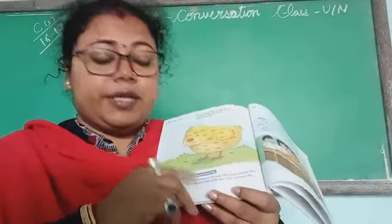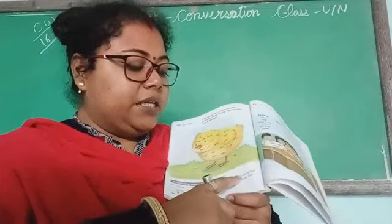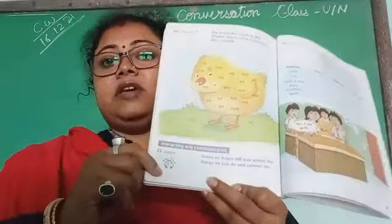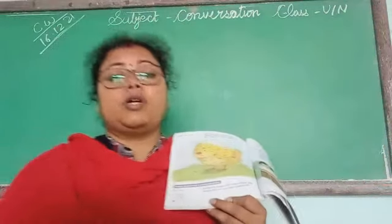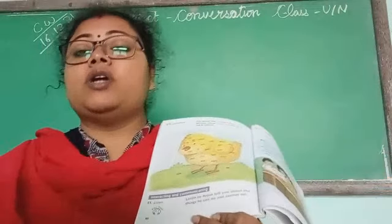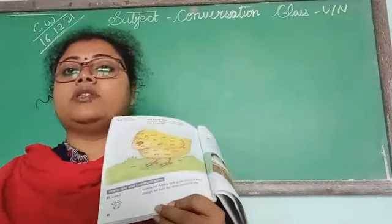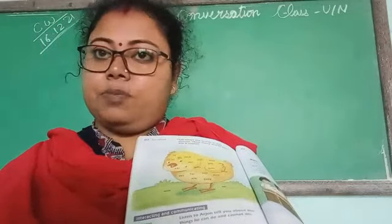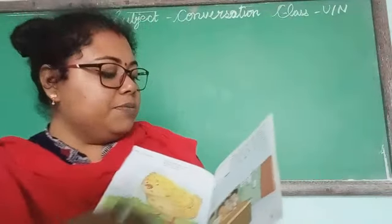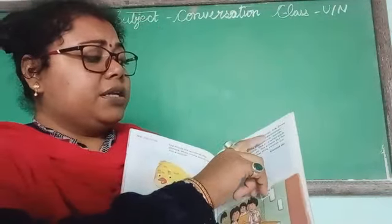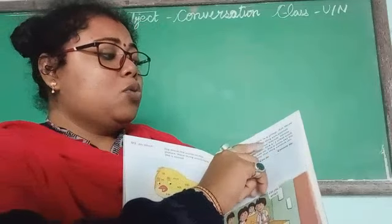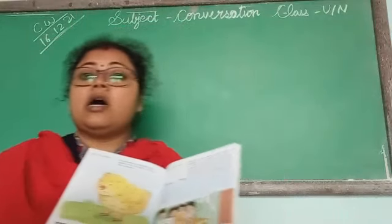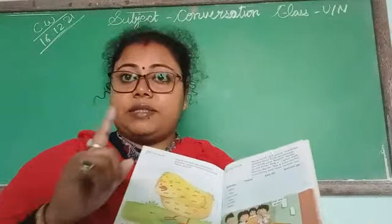Now come to the next activity. Listen to Arjun telling you about the things he can do and cannot do. If you see the track, you have to listen to Arjun saying what he can and cannot do. But the track is not present — by mistake the track is not present, so we are not hearing it. So come here and see.